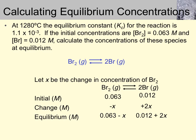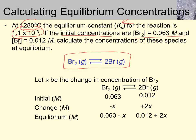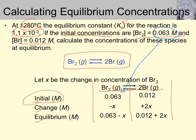Here's a simple example: the decomposition of molecular bromine into individual bromine atoms, which occurs at 1,280°C. Usually, if you have to use an ICE table, you need to be given the equilibrium constant at the particular temperature — remember that K changes with temperature. The initial concentrations of the reactant bromine (0.063 M) and the product bromine atoms (0.012 M) are given.